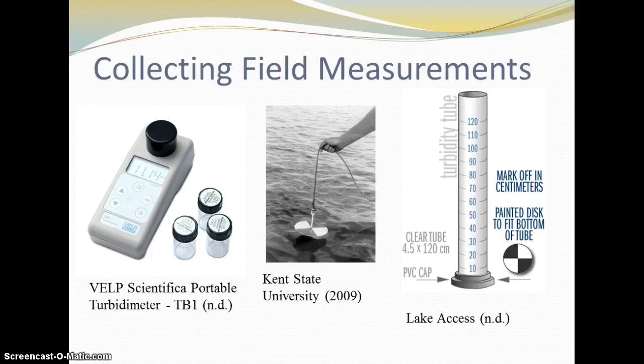In marine waters, a standard 12-inch or 30-centimeter diameter disk is used, compared to a standard 8-inch or 20-centimeter diameter disk in fresh waters. Essentially, the Secchi disk measures the extinction coefficient, giving us a feel for the depth that light penetrates into the water column. In more turbid waters, this depth will be shallower.